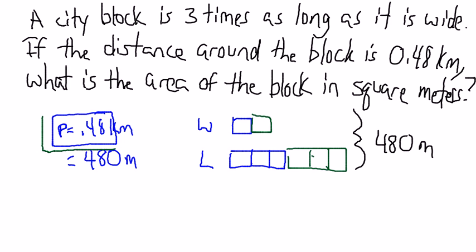Now, I need to be able to calculate area, which is length times width. So, I need to know what the length and the width are. Well, I have 1, 2, 3, 4, 5, 6, 7, 8 equal units that make up my 480 meters. So, I can find out what one unit is if I take 480 and divide it by 8.